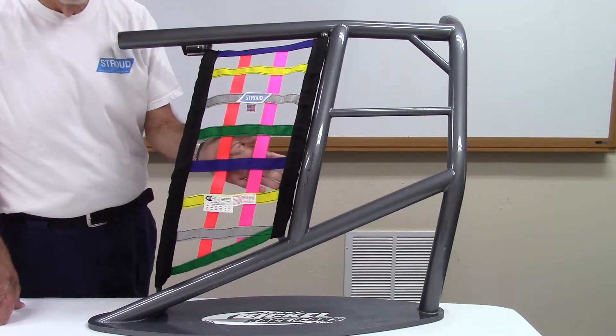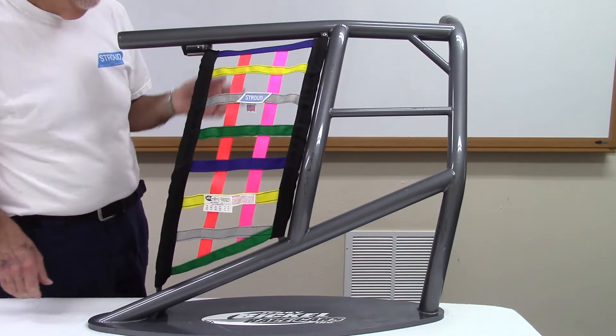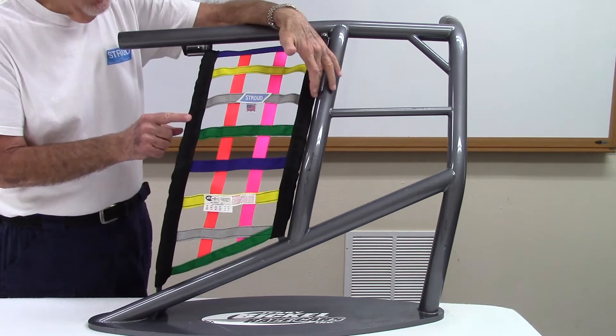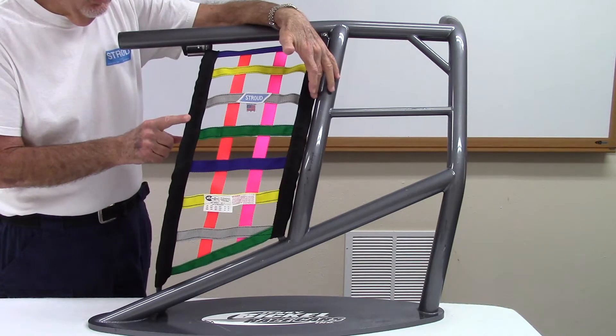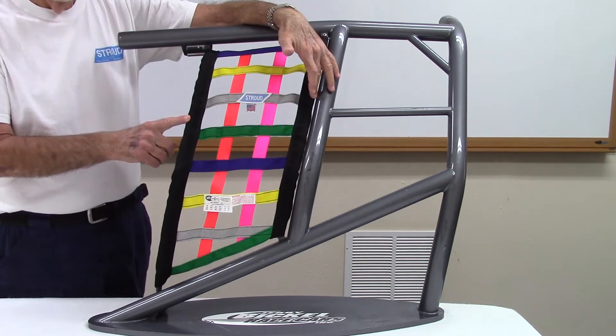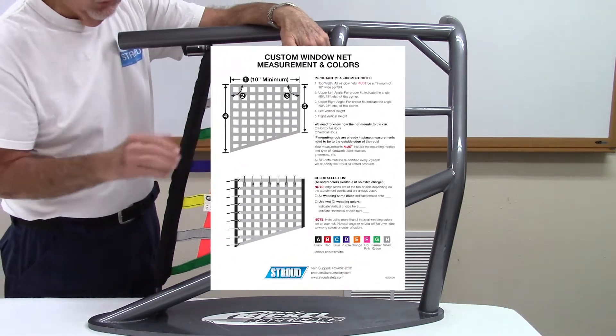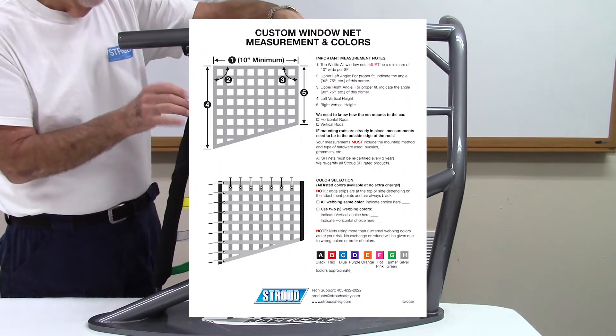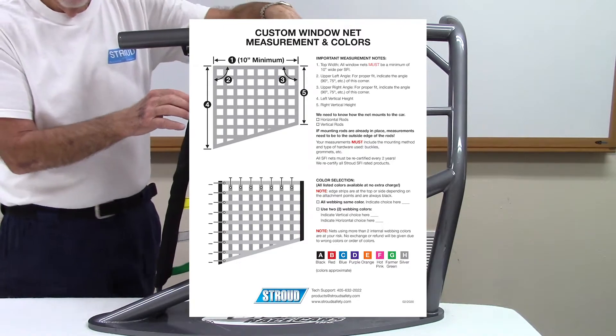Stroud nets can be ordered in a wide range of colors and combinations. Edge strips at the top, bottom, or sides, depending on the attachment points, are always black. Refer to our custom window net measurement and colors form available on our website on the nets page.